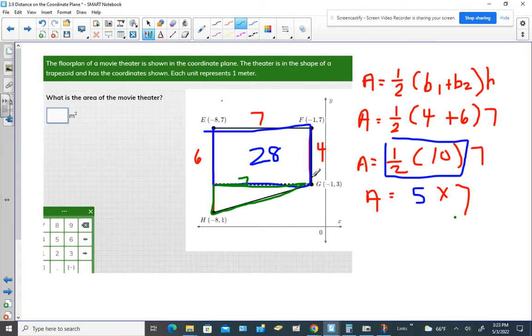Now if this is 4 over here and the entire line is 6, wouldn't that mean that this piece is 2? So we would have to do area equals half of the base times height.